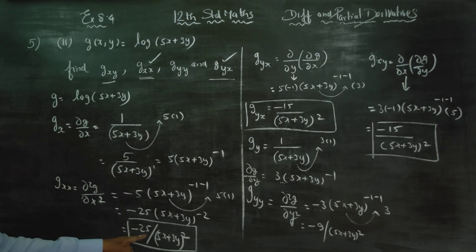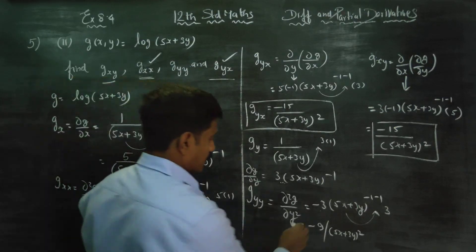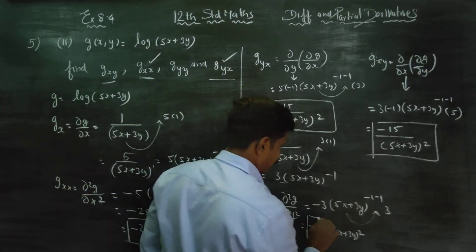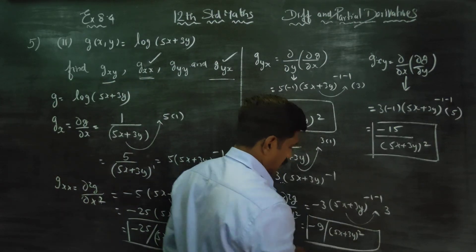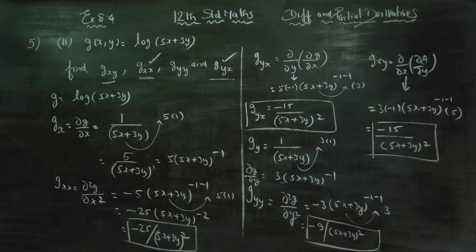The four answers are gxx, gyx, gy, and gxy — these are the four answers.